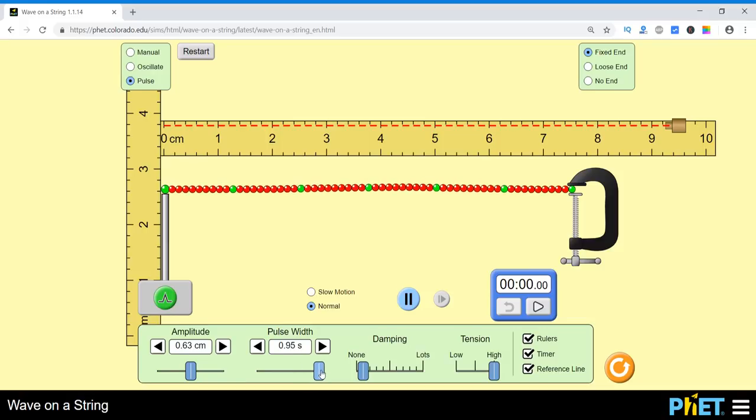If I increase the width of the pulse, then see what happens. The pulse has increased pulse width. And if I reduce it to a very small width pulse, so you see the variations.